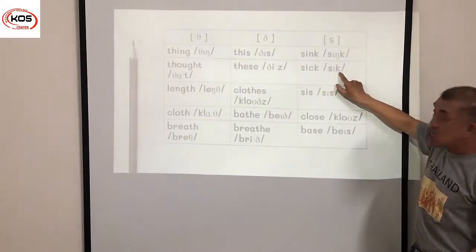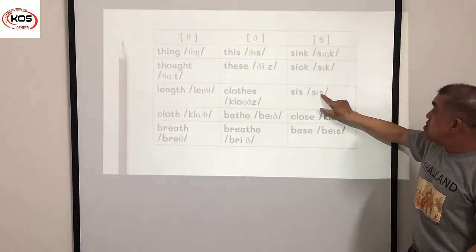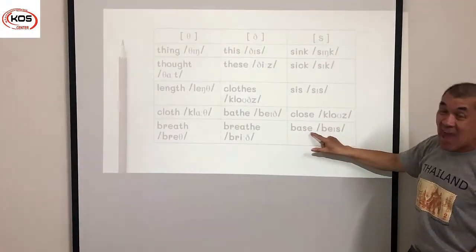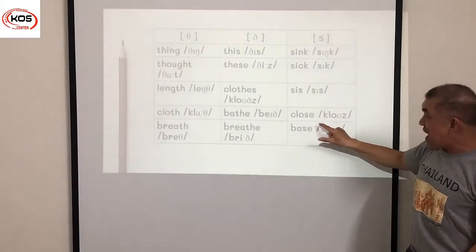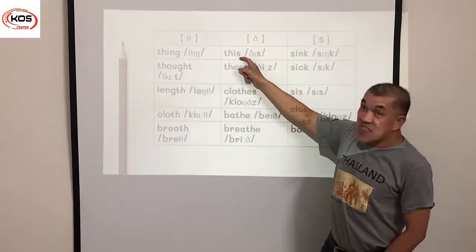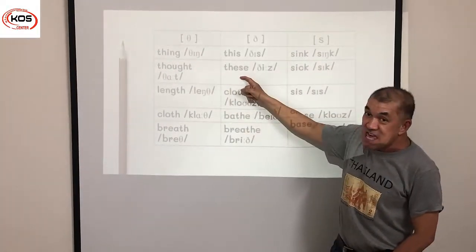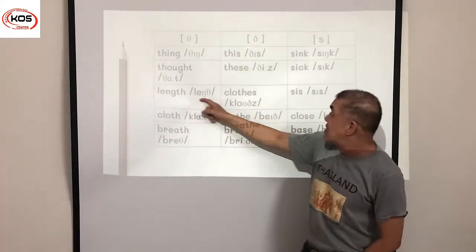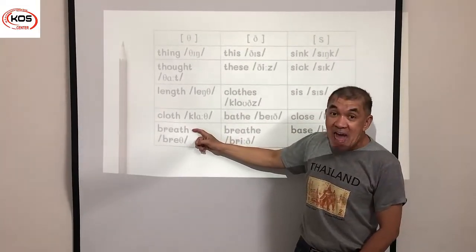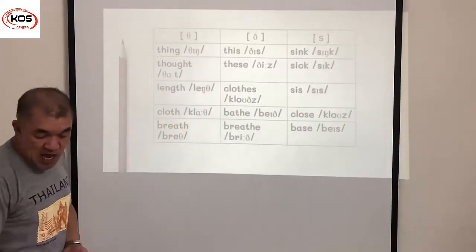Next word: sick, sick, sick. Next: sis, sis, sis. Next: close, close, close. And: base, base, base. Now I'm going to read the words side by side: thing, these, sink; thought, these, sink; length, close, sis; and breath, breathe, and base. So these are our practice sounds for today.